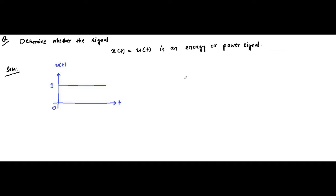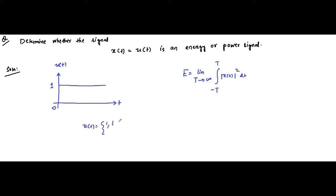First let us find the energy of the unit step signal. We know the energy of a signal can be written as the limit T tends to infinity of the integral from minus T to T of |x(t)|² dt. Here U(t) is 1 for t greater than 0 up to plus infinity, and 0 for t less than 0 up to negative infinity.